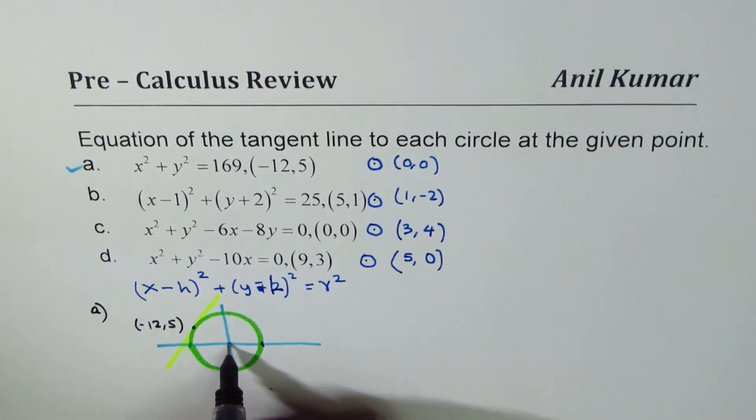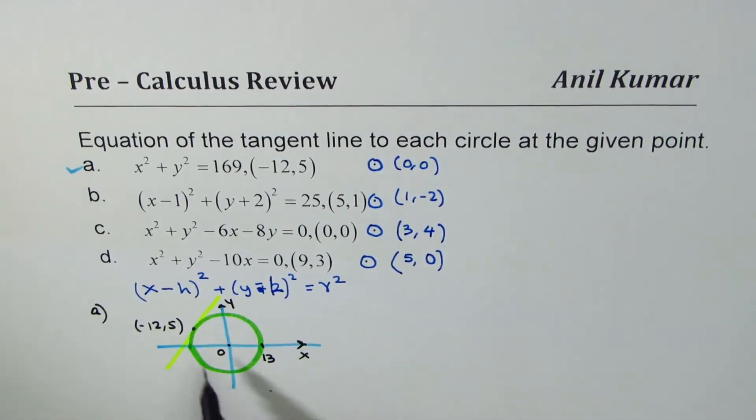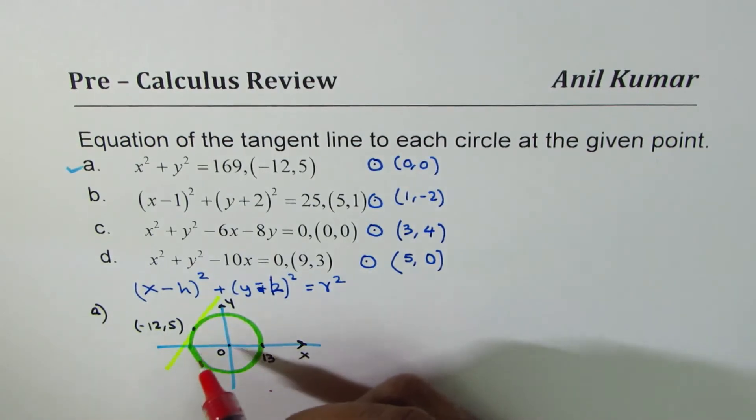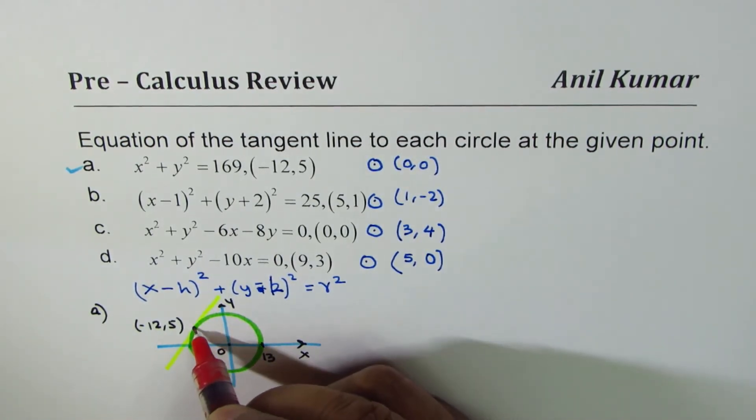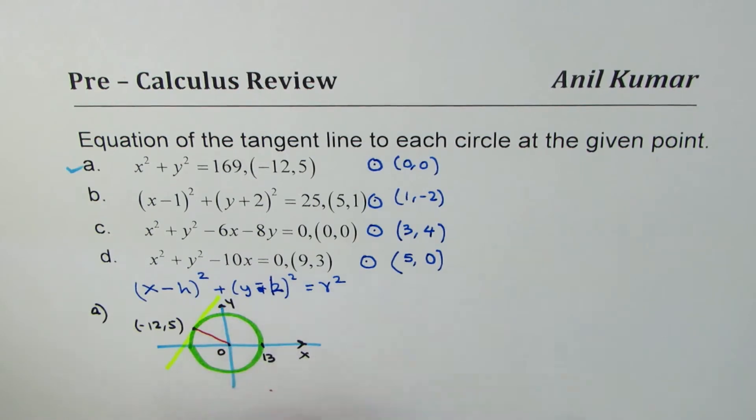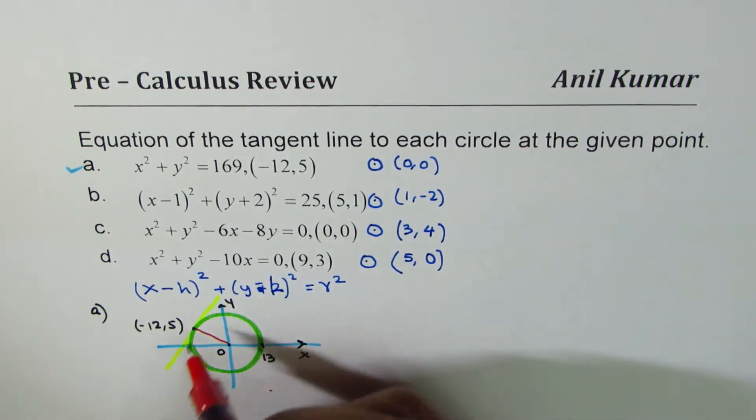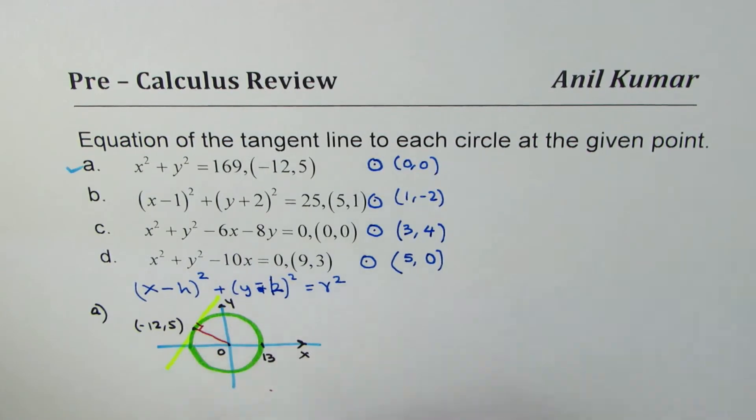This is the point which is (-12, 5). So that becomes the point of our interest. We need to find the equation of this tangent line. How do you do it? Well, the concept is, you join that point with the center. So when you join it, then the tangent has to be at right angles with the radius.